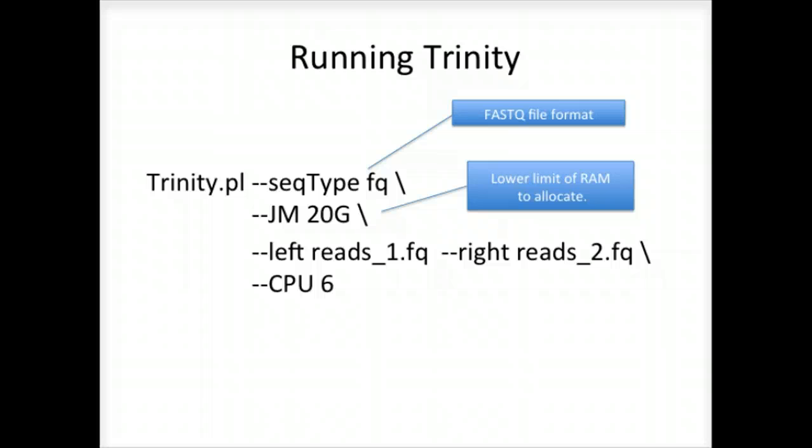The JM parameter indicates the lower limit for the amount of memory to allocate. If you're running Trinity on a high memory server, you might allocate more memory to speed up the initial stages of the assembly process.